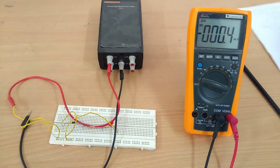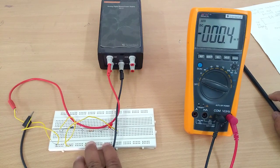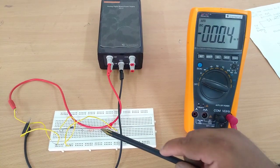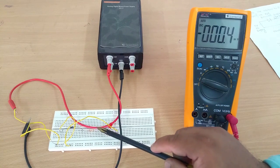So corresponding to that I have taken exactly a series circuit. There is a resistor here. A resistor of 1.2 kilo ohm is being taken.